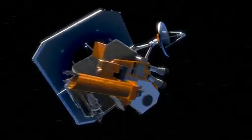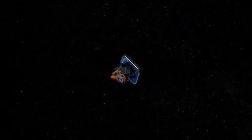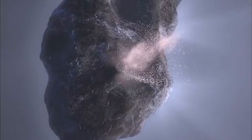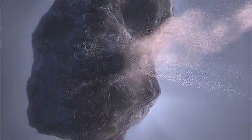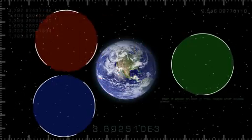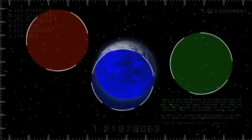Well it turns out they can. Remember the Deep Impact mission, the NASA spacecraft that slammed a probe into a comet in 2005? Well now it's headed for another comet. While on its way we used its instruments to study the amount of red, green and blue light reflected by Earth, the Moon and Mars.